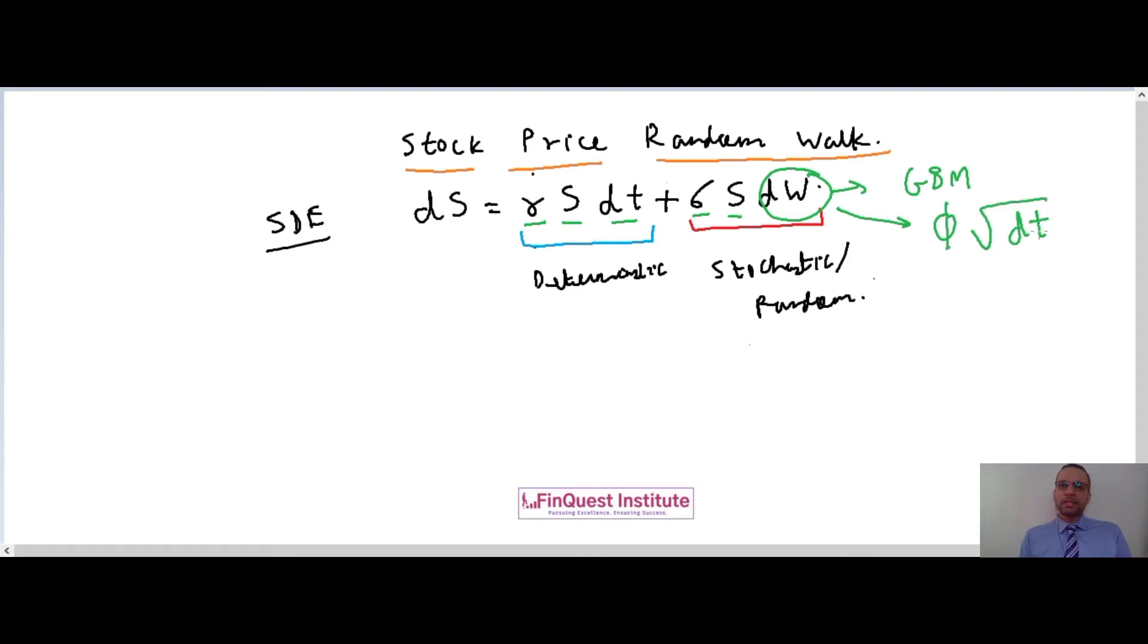I represent dW as phi times the square root of dt. So phi is defined as a random number which is drawn from a certain distribution, and root of delta t, this is nothing but the square root of my time step.